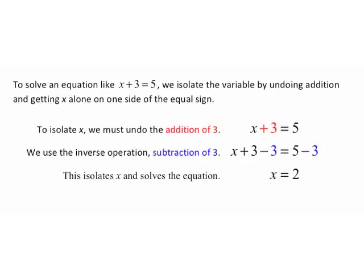Now let's see how the addition property of equations is going to allow us to solve an equation. To solve x plus 3 equals 5, we isolate the variable by undoing addition and getting x all alone on one side. The thing keeping x from being all alone is this addition of 3. To isolate x, we undo the addition of 3 using the inverse operation — subtraction of 3 — subtracting 3 from each side of the equation.